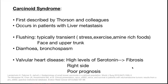Carcinoid syndrome was first described by Thorsten and colleagues. It occurs in patients with liver metastasis and is characterized by flushing, diarrhea, bronchospasm, and valvular heart disease — most commonly right-sided — due to high levels of serotonin, which leads to fibrosis. Whenever valvular heart disease is present, it indicates poor prognosis.